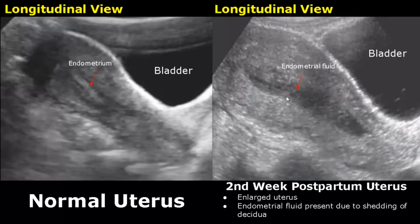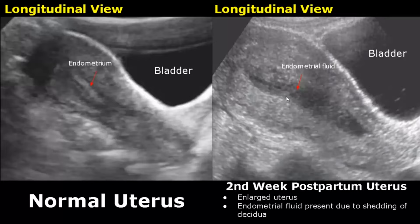This image is of a second-week postpartum uterus taken at eight days after delivery. It has decreased in size compared to earlier stages, but is still enlarged. Some endometrial fluid is present — this hypoechoic area is fluid due to shedding of the decidua, and it is a normal finding on ultrasound.